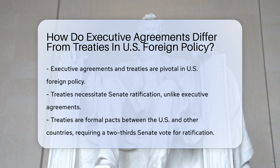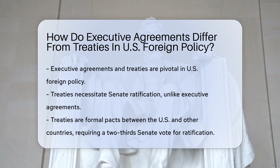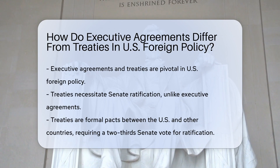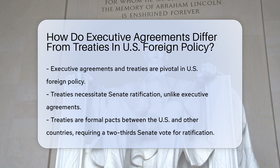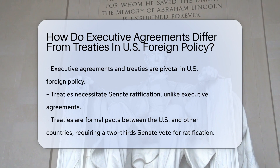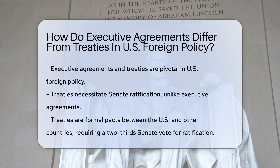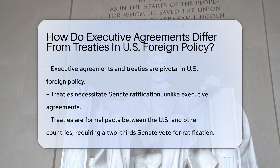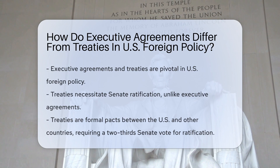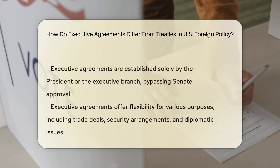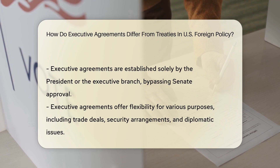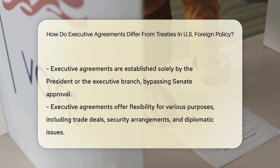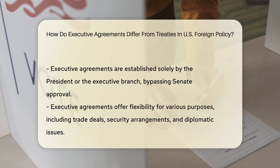Executive agreements and treaties both play vital roles in U.S. foreign policy. Treaties require Senate approval, while executive agreements do not. Treaties are formal agreements between the U.S. and other nations, needing a two-thirds Senate vote for ratification. Executive agreements are made solely by the president or the executive branch without Senate approval.